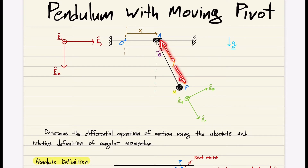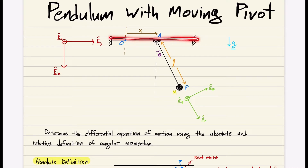The link has length L and the angle off the vertical is theta. This problem is a little different from the previous pendulum: the hinge point is actually moving with some prescribed motion X — it could be a sine function or anything — pointing from the inertially fixed point O out to hinge A. The task is to determine the differential equation of motion using both the absolute and relative definitions of angular momentum.